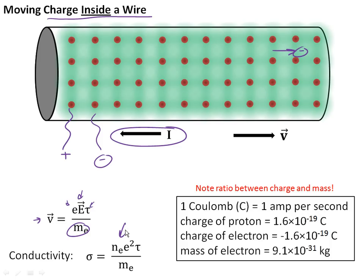Essentially what this says is that positive charges remain fixed while the negative charges move inside a wire. They move very quickly because the charge-to-mass ratio is very large — even fairly small electric forces can accelerate these electrons to very high velocities. So this is our first case, something we're very familiar with: the current, or the electrons, moving inside the wire.